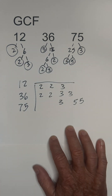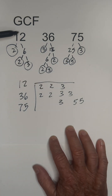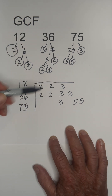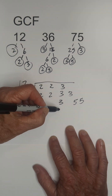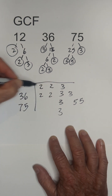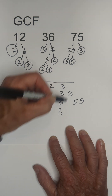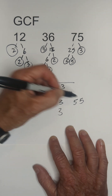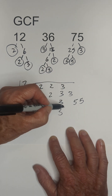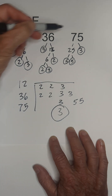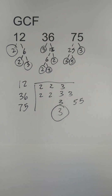Now in order to find the GCF, you need a column with three numbers. We have one because this column is no, no, yes, no, no. And so the greatest common factor of 12, 36, and 75 is 3.